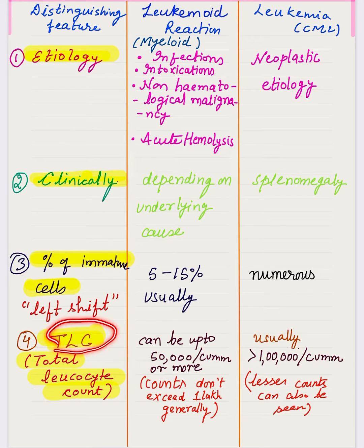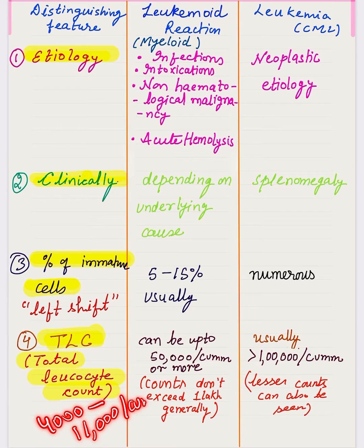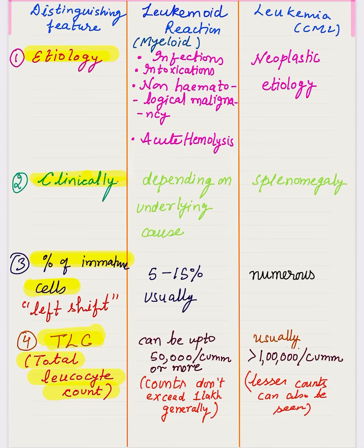The normal total leukocyte count is 4,000 to 11,000 per cubic mm. A WBC count above 11,000 is called leukocytosis. When counts are much higher — up to 50,000 or more — we call it leukemoid reaction, and in leukemoid reaction the counts generally do not exceed 100,000. In leukemia, the count is typically in the lakhs, usually more than 100,000, although some cases may present with lower counts.